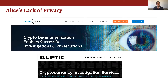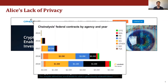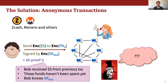These privacy concerns are realistic. For cryptocurrencies like Bitcoin, there are many companies that sell professional de-anonymization tools, including to the US government. So to retain her anonymity, Alice could decide to use an anonymous cryptocurrency like Zcash or Monero.